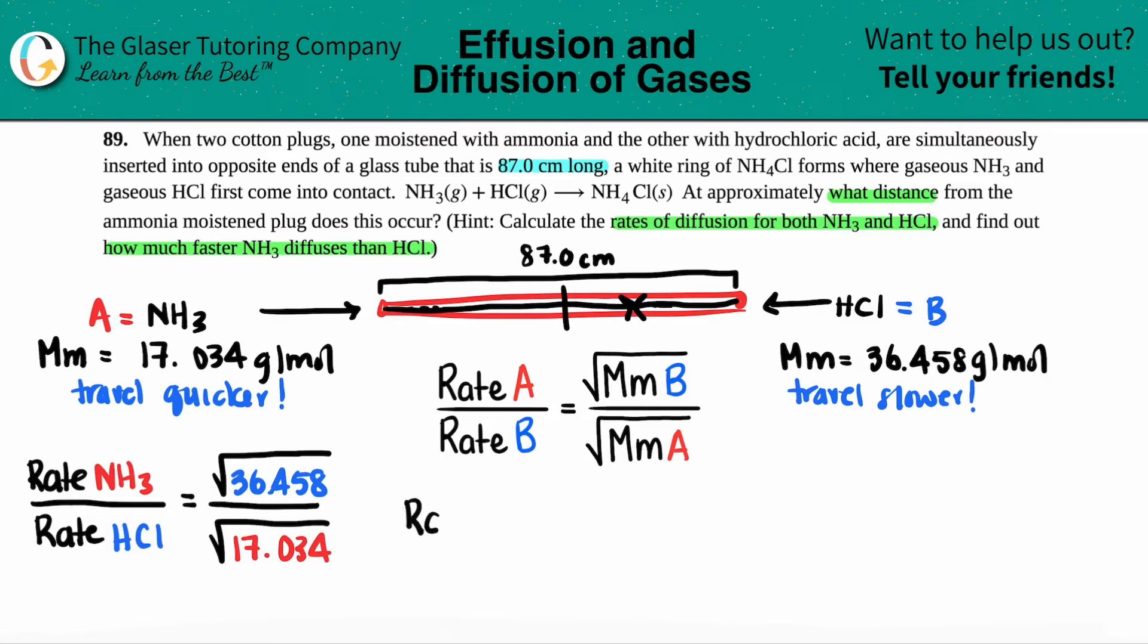Let's find out that number. The rate divided by the rate. We're finding out how much quicker NH3 is going to be traveling from HCl. In my calculator, I'm doing the square root of 36 divided by square root of 17, and I get roughly 1.463. We'll say 1.46.